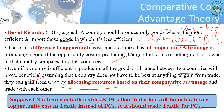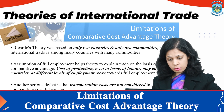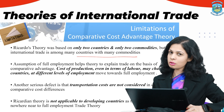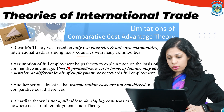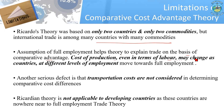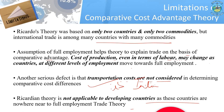However, Ricardo's theory has limitations. It was based on only two countries and two commodities, while international trade involves many countries and many commodities. The theory assumed full employment, but costs of production may change as countries at different employment levels move toward full employment. Transportation costs were not considered in determining comparative cost differences — the cost of transportation between the US and India cannot be ignored. The theory is also not applicable to developing countries far from full employment.